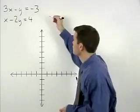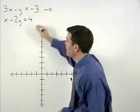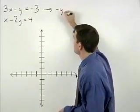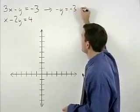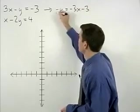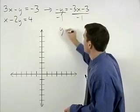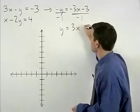For our first equation, we would subtract 3x from both sides to get negative y equals negative 3x minus 3. Divide both sides by negative 1 and y equals 3x plus 3.